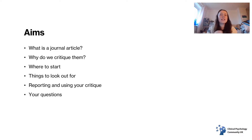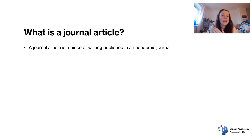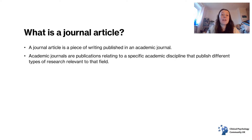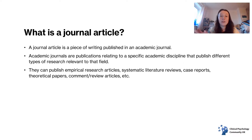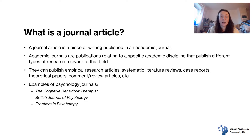The aims today: we are going to look at what is a journal article, why we critique them and why it's important, some practical tips on where to start and things to look out for, and how to report and use your critique. So, what is a journal article? A journal article is a piece of writing published in an academic journal — publications relating to a specific academic discipline that publish different types of research. They can publish empirical research articles, systematic literature reviews, case reports, case series, theoretical papers, and comment or review articles. Examples of some psychology journals include the Cognitive Behaviour Therapist, British Journal of Psychology, and Frontiers in Psychology.